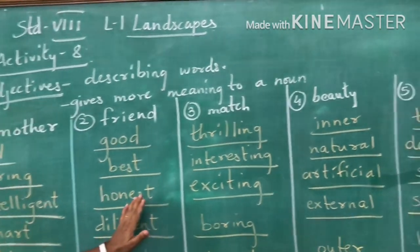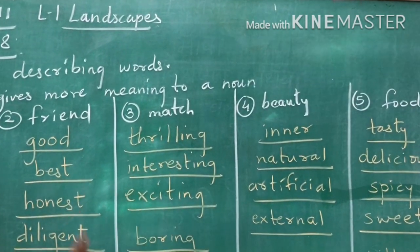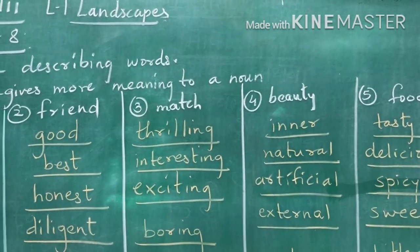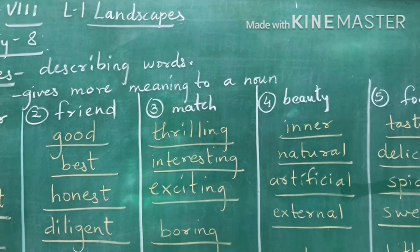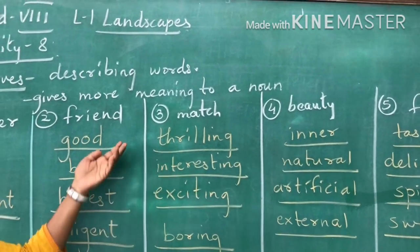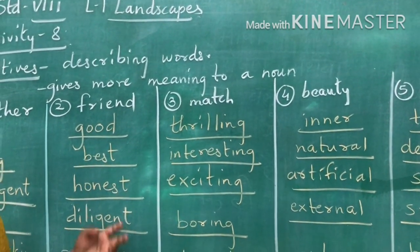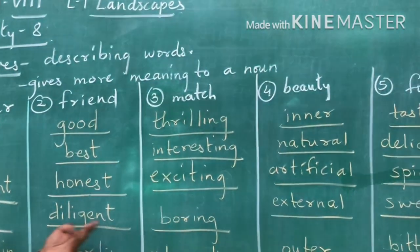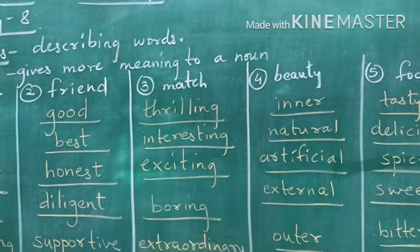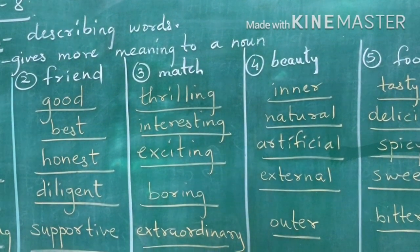There are 5 more words given and you have to write adjectives for them. The first one is 'friend.' You can say good friend, best friend, honest friend, diligent, hard working friend, or supporting friend.